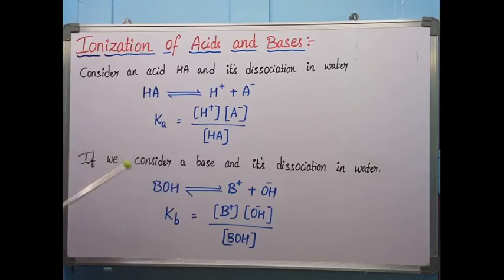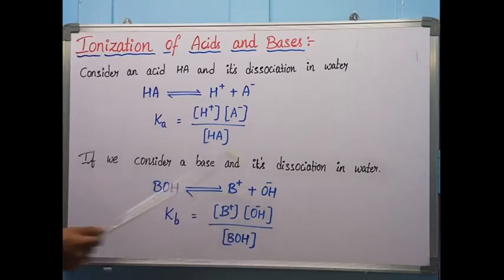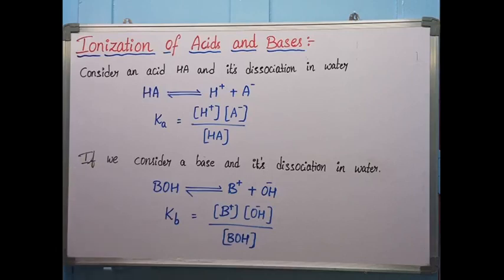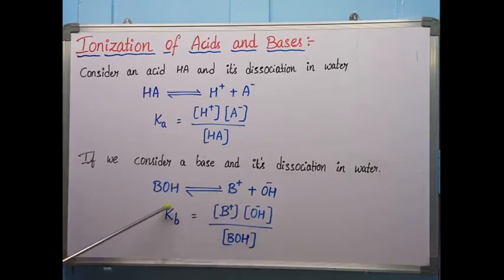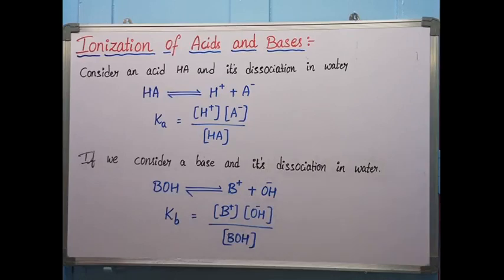Similarly for a base, BOH when added to water gives B+ and OH− ions. The base dissociation constant Kb equals the products concentration divided by the reactants concentration: Kb = [B+][OH−] / [BOH]. This is the way of writing the dissociation constant or equilibrium constant for acids and bases. This completes our discussion on different definitions of acids and bases and ionization of acids and bases. Thank you so much for watching.